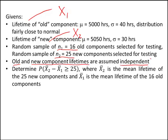Let's first find the distributions of the sample mean for the old component and the new component. Let X-bar₁ be the sample mean of the lifetime of the old component. Since the lifetime of the old component is fairly close to normal, even with a random sample of 16, X-bar₁ is going to have a normal distribution. If you already start out fairly close to normal, you can choose a smaller sample size and still have X-bar₁ be normal. I'm invoking the central limit theorem to do this.